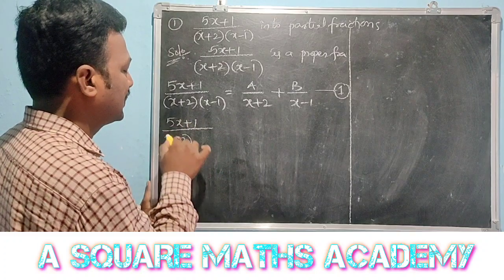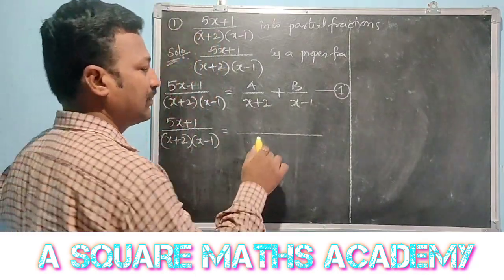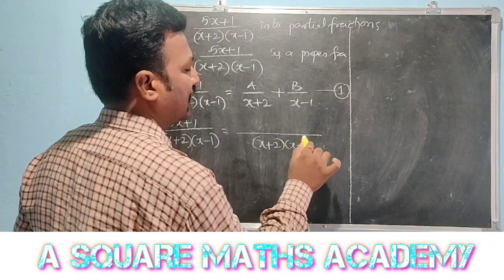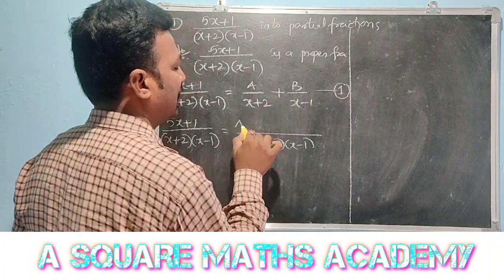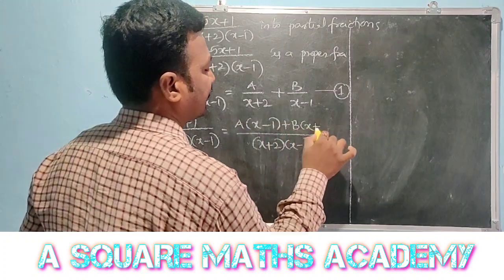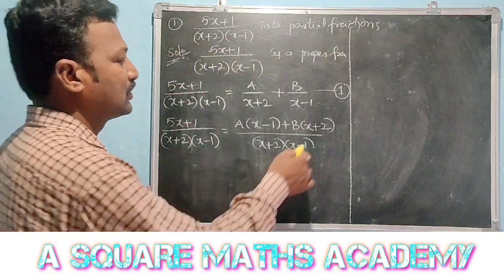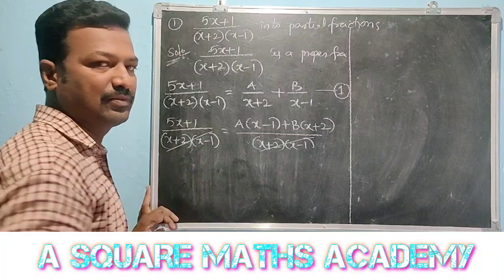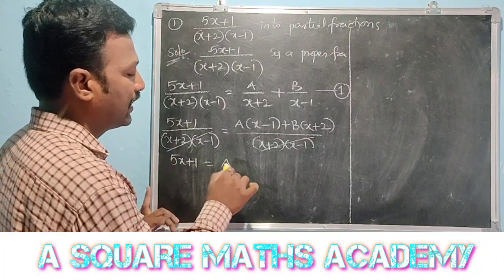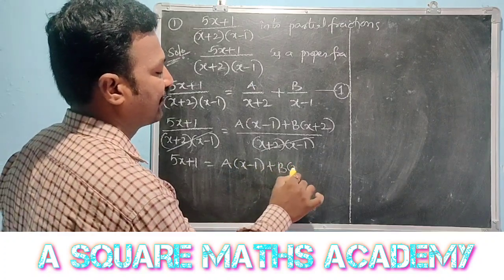Taking LCM of (x plus 2)(x minus 1) on the right side, we get: 5x plus 1 by (x plus 2)(x minus 1) equals A(x minus 1) plus B(x plus 2) all over (x plus 2)(x minus 1). Cancelling (x plus 2)(x minus 1) from both sides, we get: 5x plus 1 equals A(x minus 1) plus B(x plus 2). Call this equation number 2.